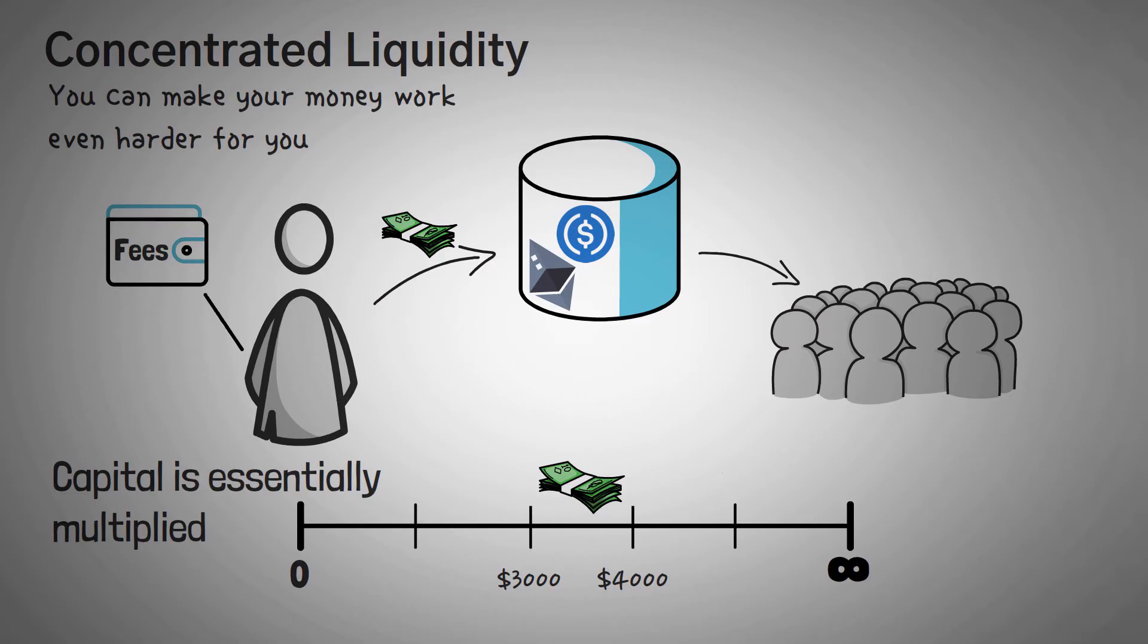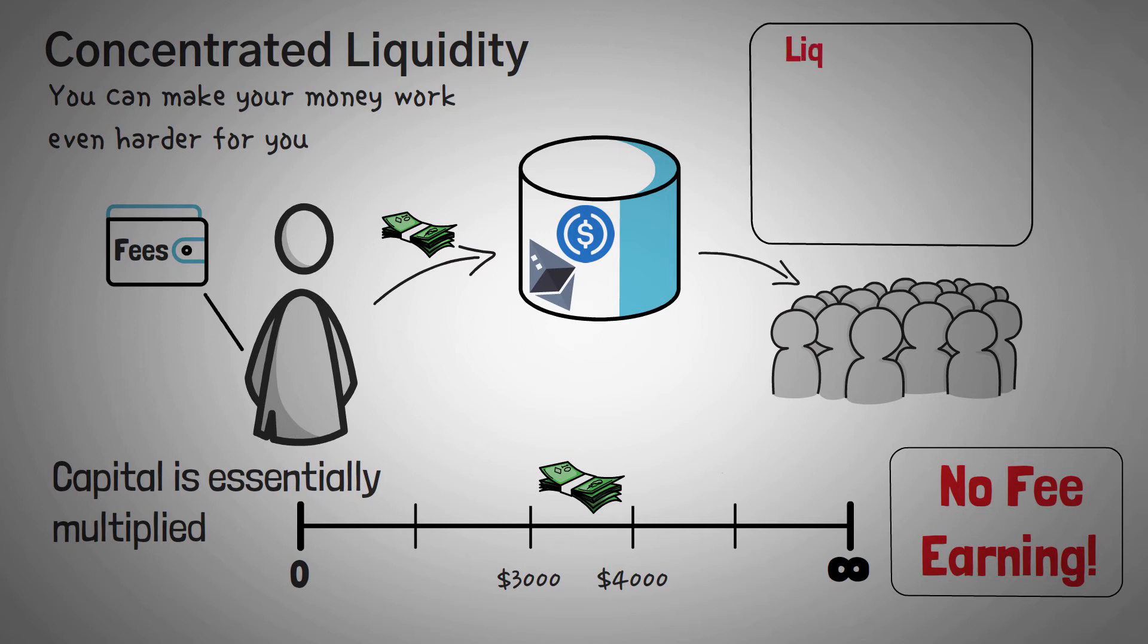The benefit to this is that your capital is essentially multiplied and we'll get into that later. When the price falls out of both of those ranges, two major things happen. Number one, you obviously stop earning fees. Now, this is quite simple as you only provided your assets to collect fees in those ranges. Number two, your liquidity or the money that you provided will be turned into one single asset.